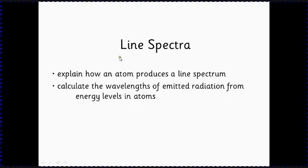Now we've established that we can think of a particle model of light, we can think of light as being made of photons, we can start to look at line spectra. This is to do with how an atom produces a spectrum of light, and then we're going to look at the wavelengths of the emitted radiation and how that's to do with the energy levels in atoms that you've talked about in chemistry at GCSE.